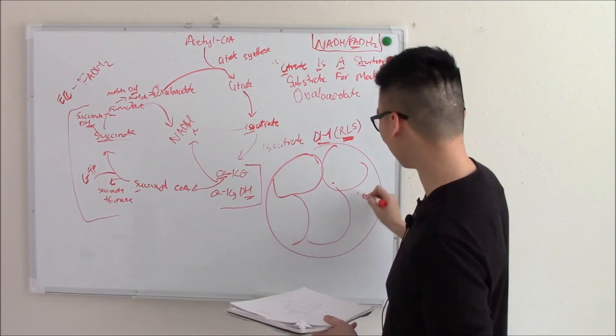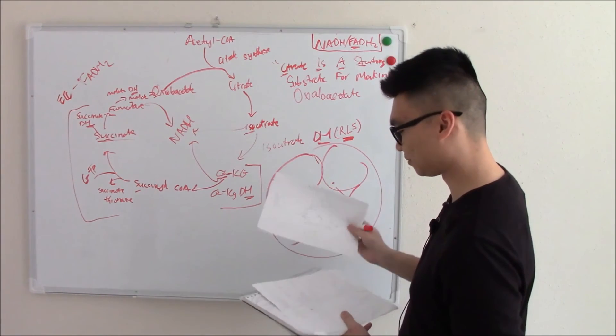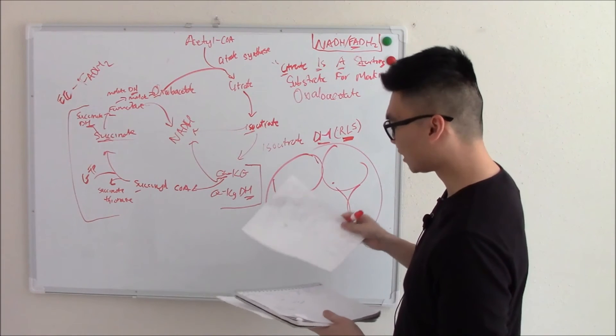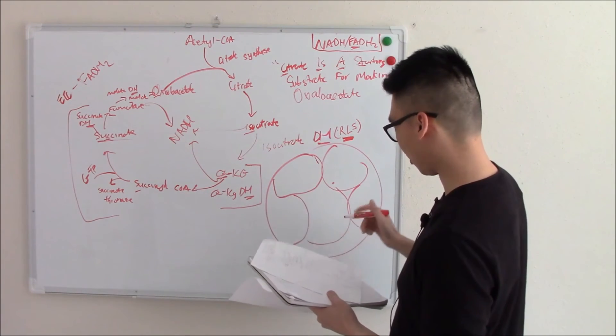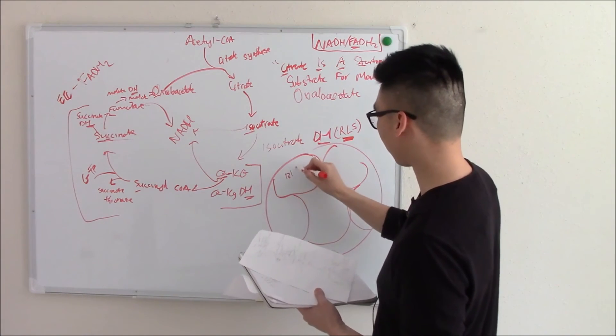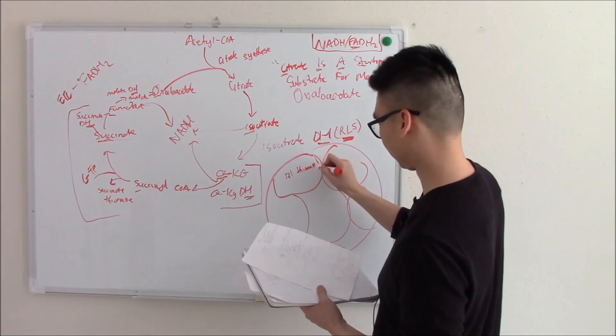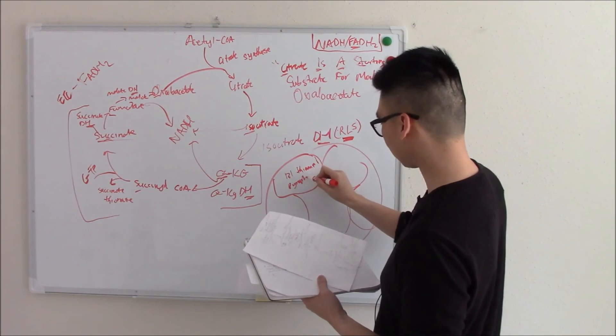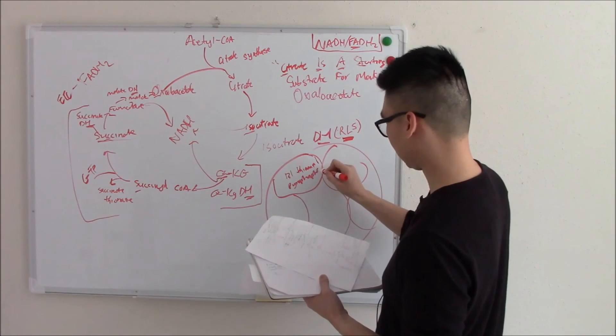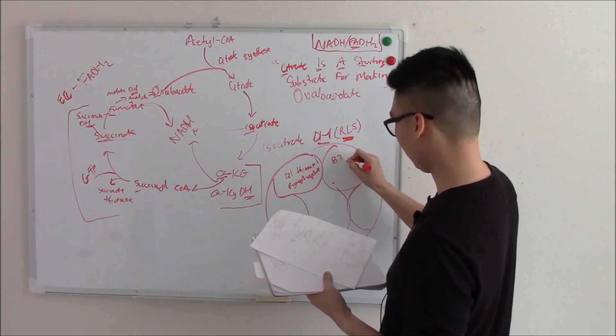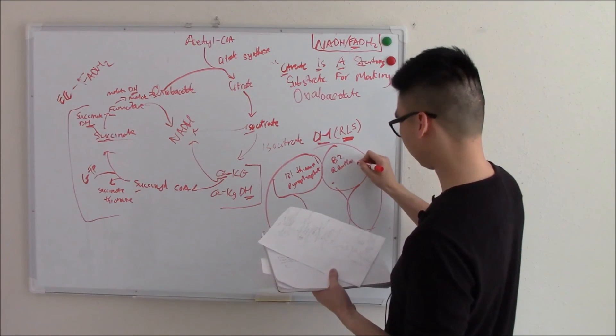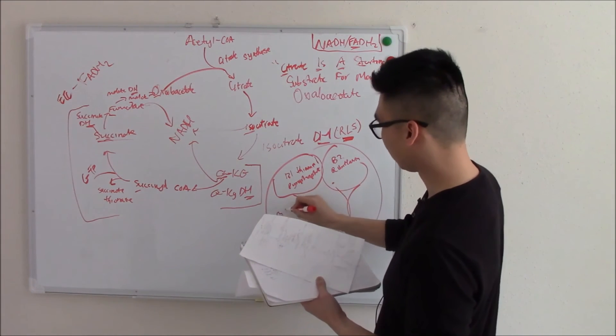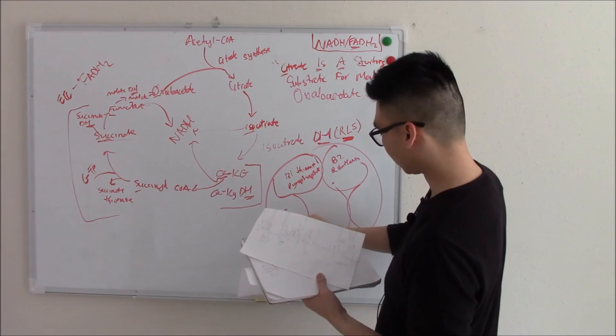These are your B vitamins: B1 vitamin thiamine pyrophosphate, B2 which is riboflavin, B3 which is your NAD/niacin, B5 pantothenic CoA, and then lastly your lipoic acid.